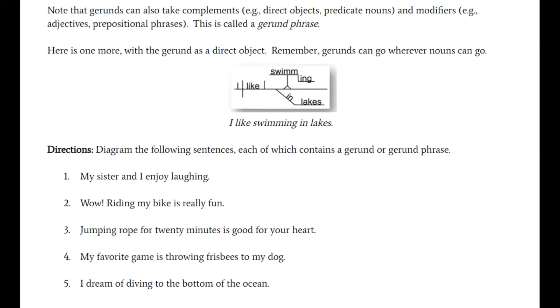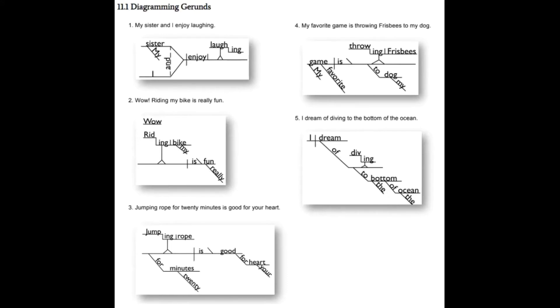Here are the answers for diagramming gerunds. Number one: 'My sister and I enjoy laughing.' 'My sister and I' is the compound subject, 'enjoy' is the verb, and there's a direct object that follows it — enjoy what? Enjoy 'laughing.' You'll notice the -ing part of the gerund goes on the bottom step.